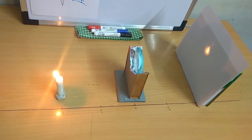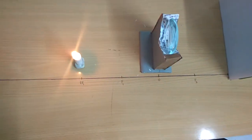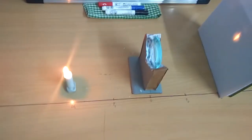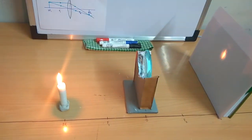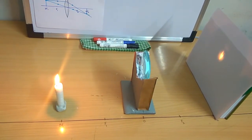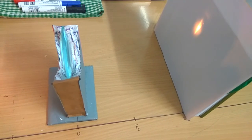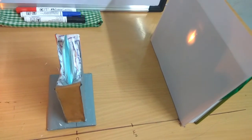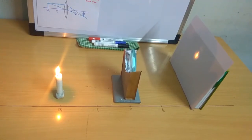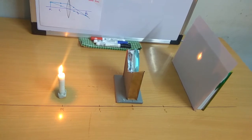In the second case, we are going to take the position of the object as 2f1. We have placed the candle at 2f1, and you can see that the image is formed on the screen at 2f2. The image is inverted, real, and of the same size.